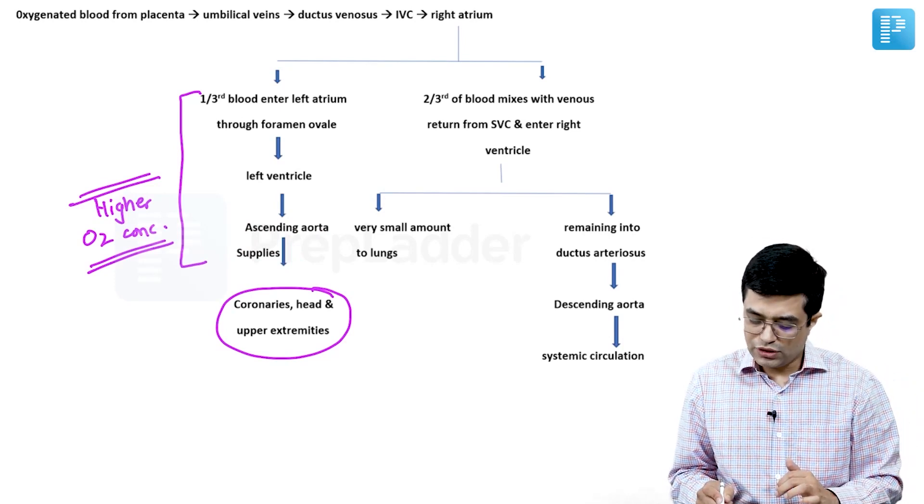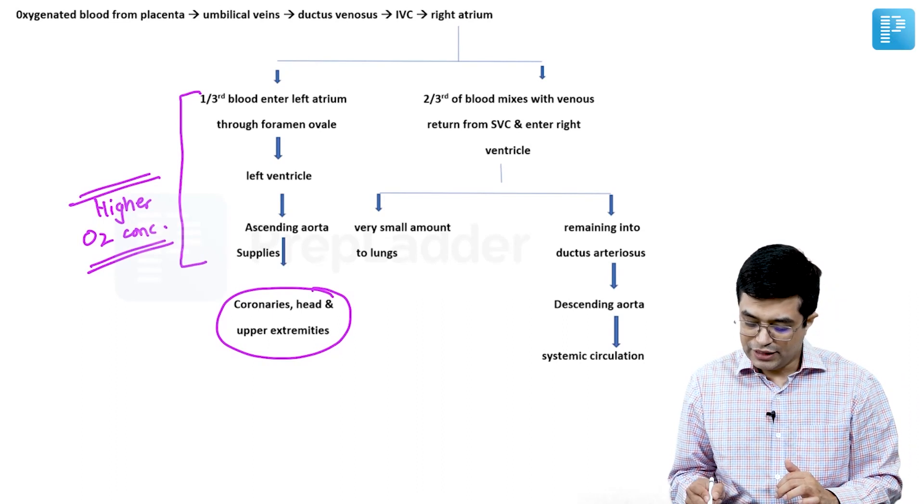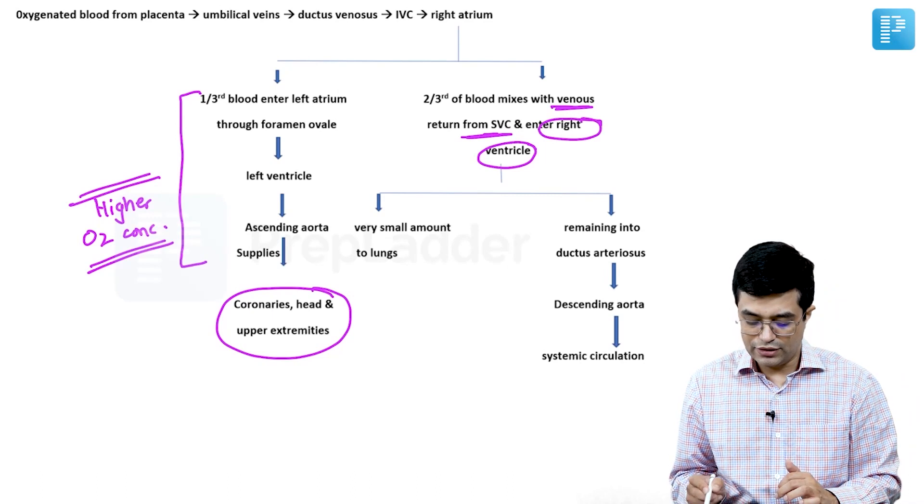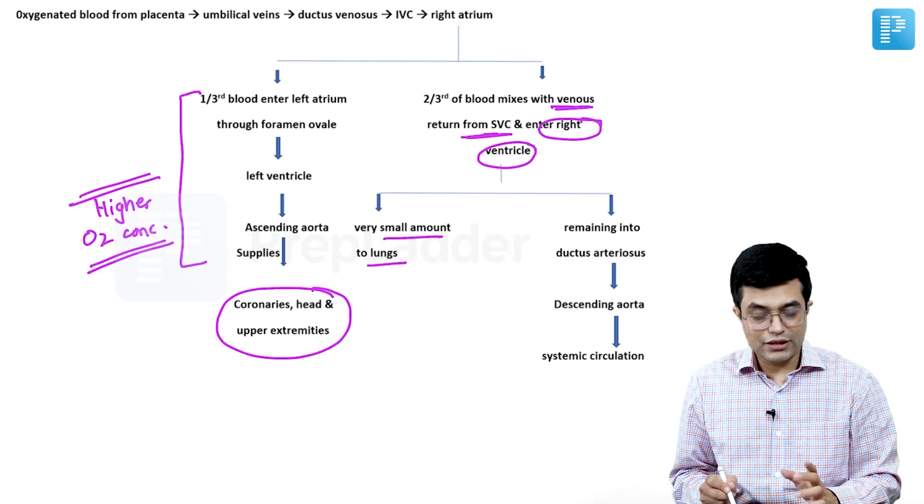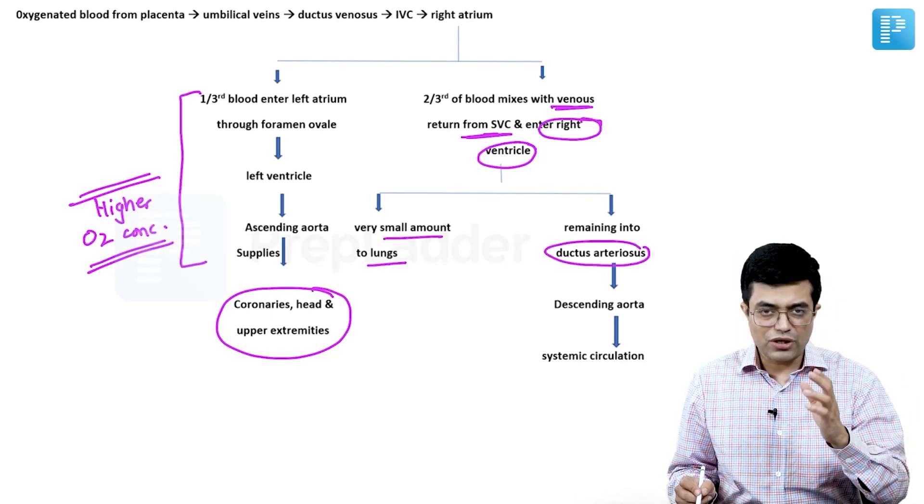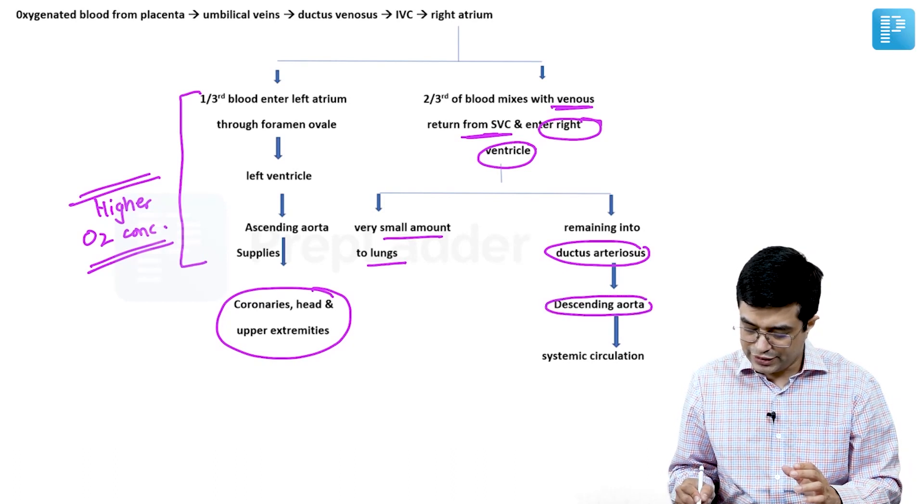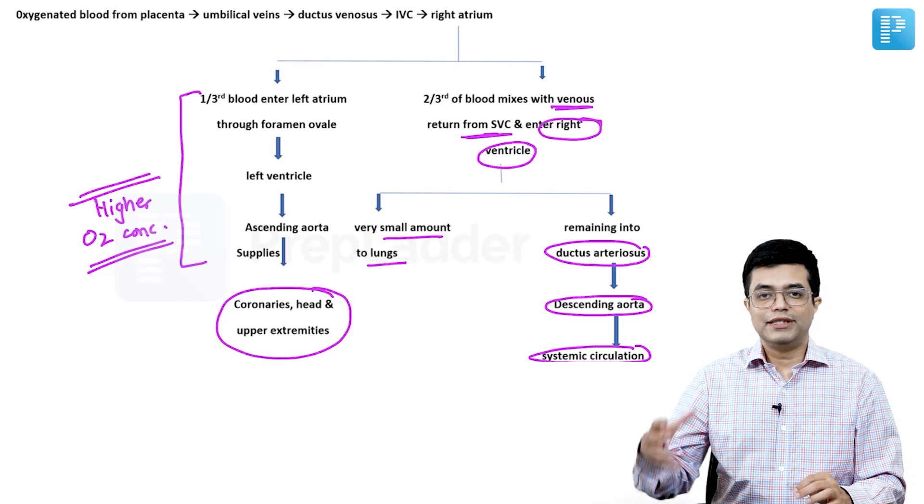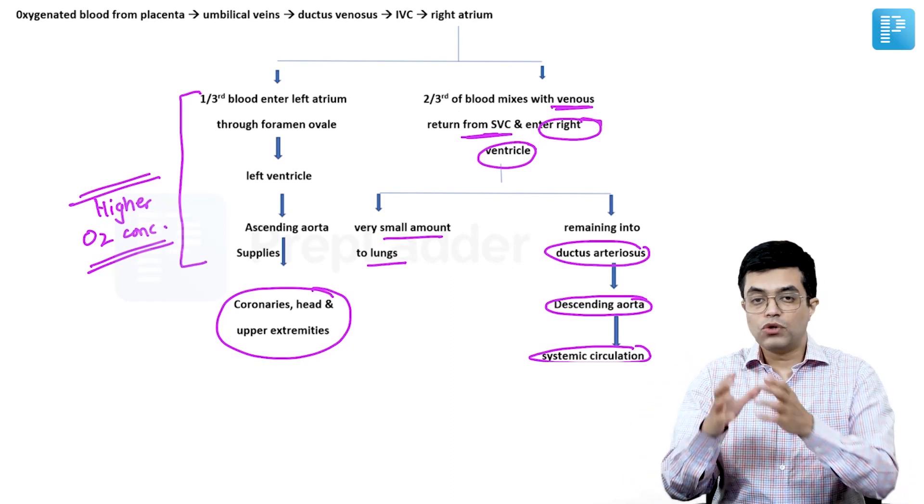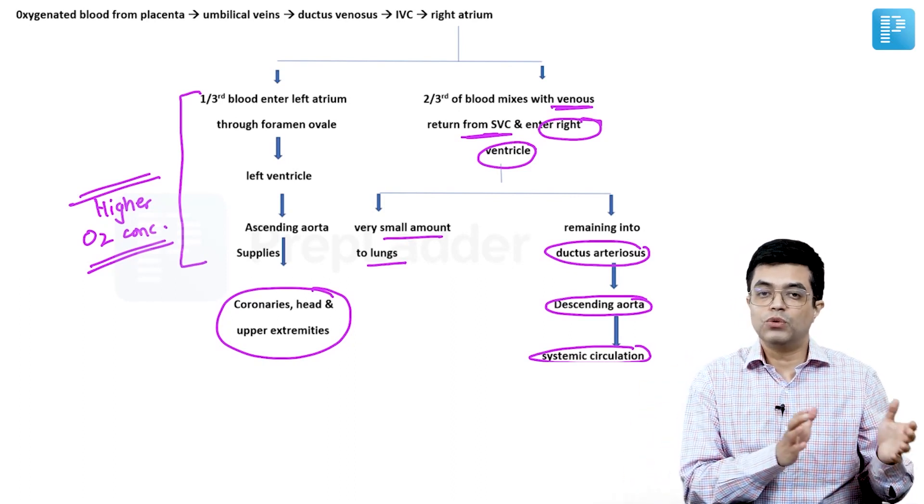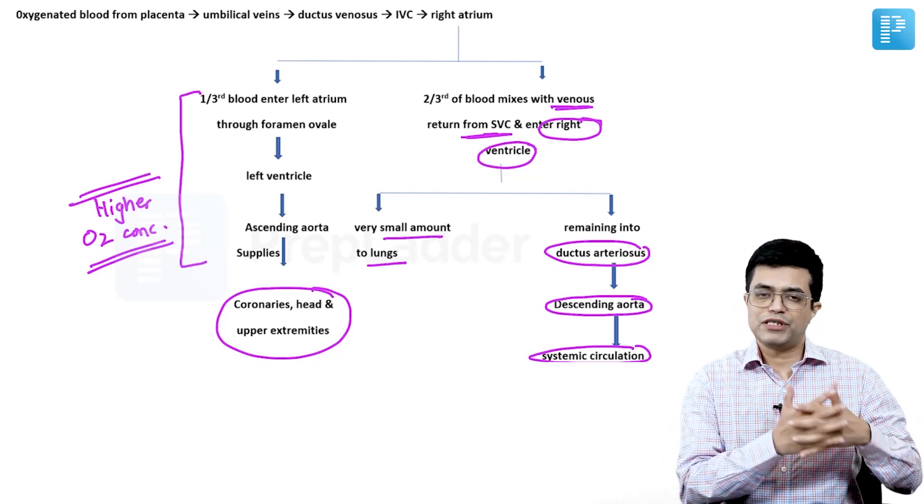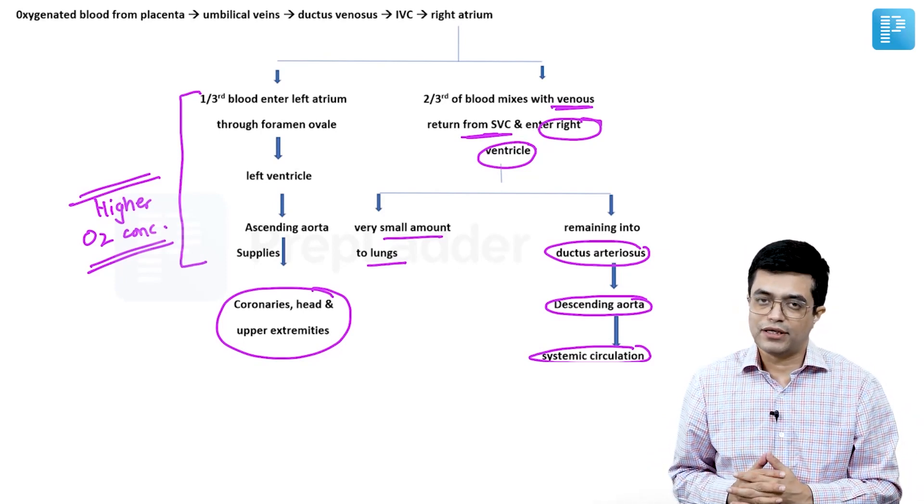On the other hand, two third of this blood reaching the right atrium mixes with the venous return coming from superior vena cava and it enters the right ventricle. Very small amount goes to the lungs. Through ductus arteriosus, a majority of this is transferred to descending aorta and into systemic circulation. So in a fetus also, the upper limb and head and neck receive more oxygenated blood compared to the lower limbs and internal organs.